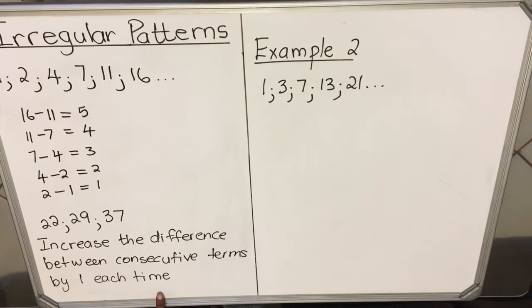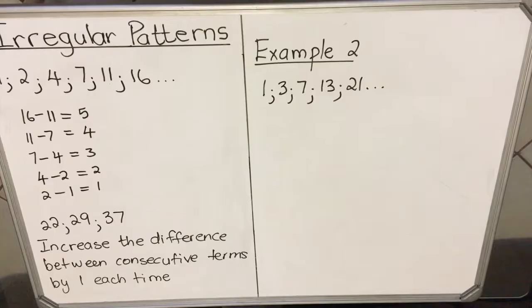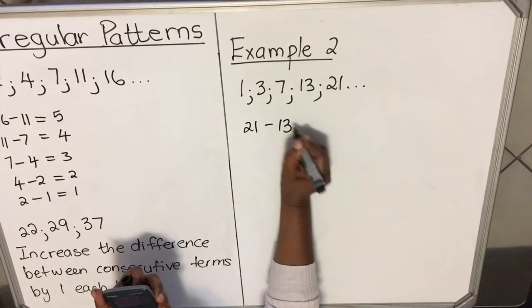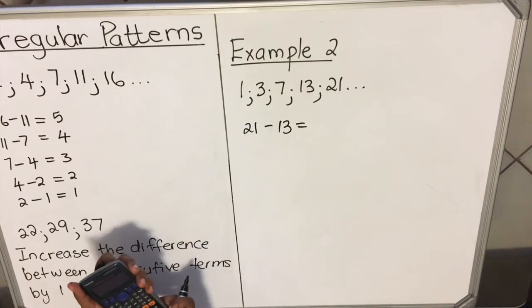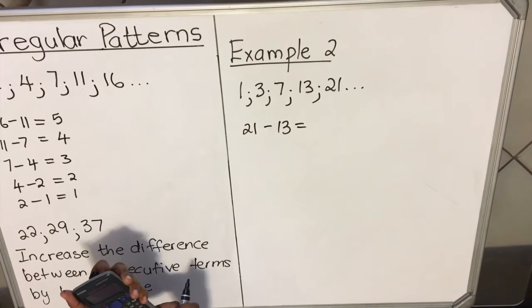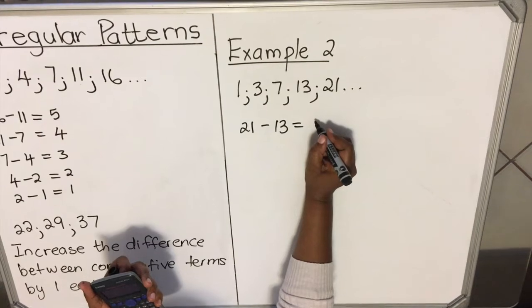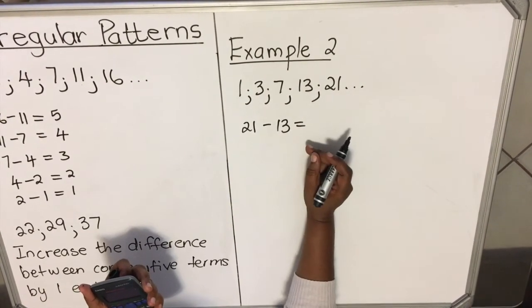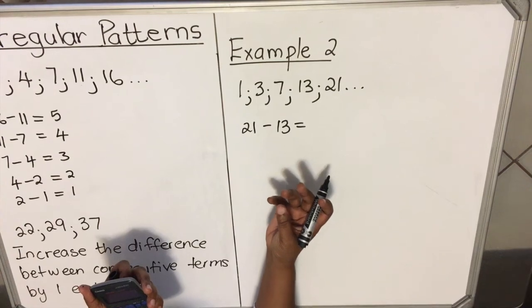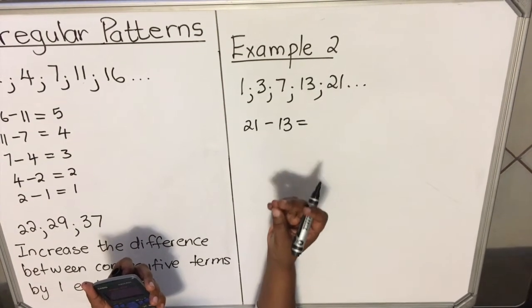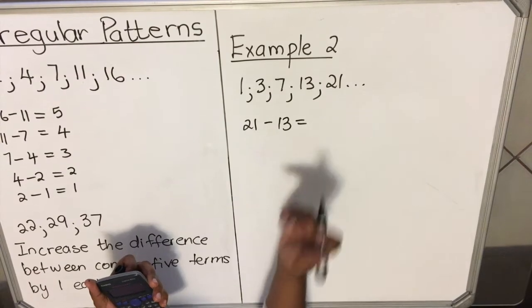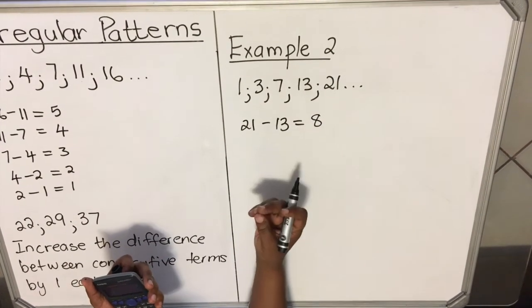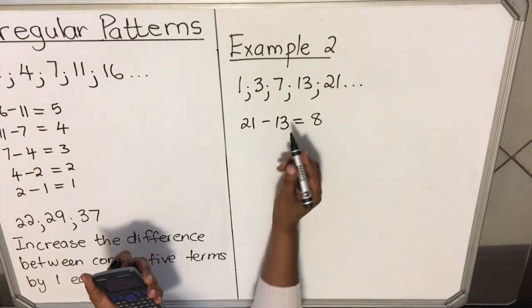Let's look at the next example. With this example: 1, 3, 7, 13, 21. It doesn't mean that it always works. You remember you start by trying the common difference. If it doesn't work, the common ratio. If it doesn't work, then you try this. If it doesn't work, you look whether it's quadratic. It doesn't mean there's a particular way of getting these patterns; you just try them.